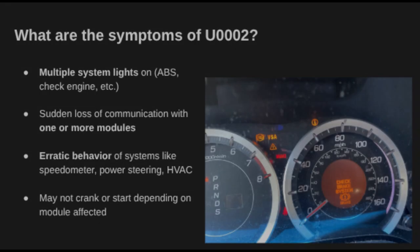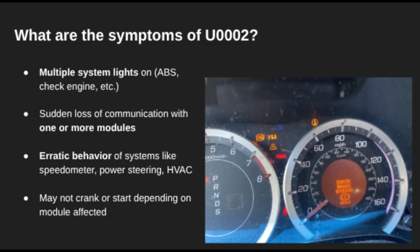So how does U0002 show up? You might see multiple warning lights come on at once, like the ABS light, airbag light, or check engine light. The car might lose power steering, shift poorly, or the dash gauges may go dead. And depending on which module drops offline, the car may even refuse to start.